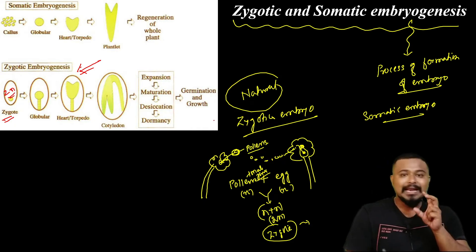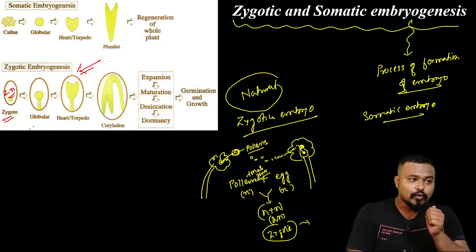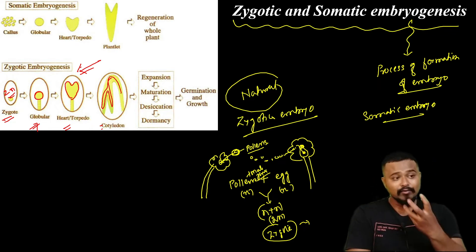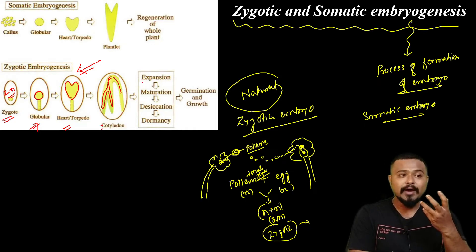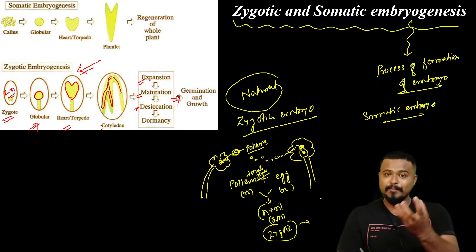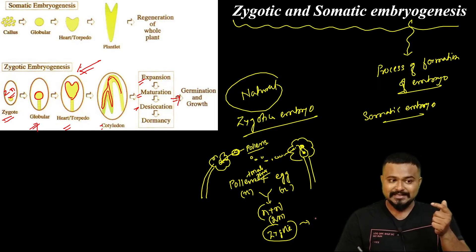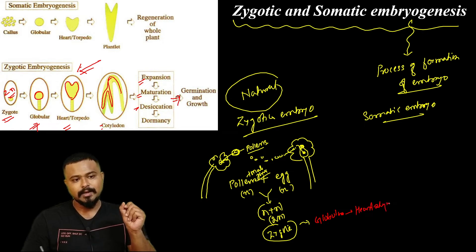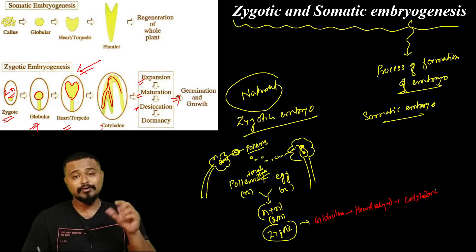In zygotic embryogenesis, after fertilization, the embryo develops. What is the cotyledon? The cotyledon is the seed leaf. The stages include expansion, maturation, desiccation, and finally germination. The cotyledon is very important for the initial growth of the plant.